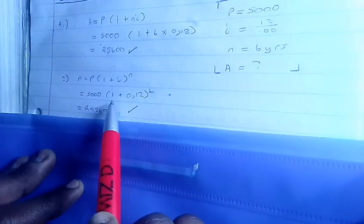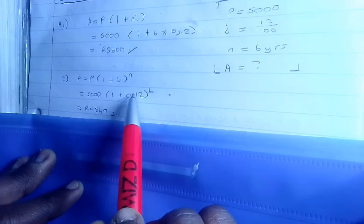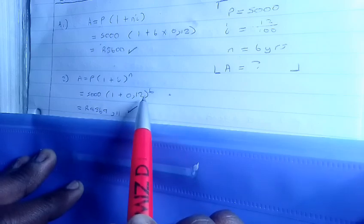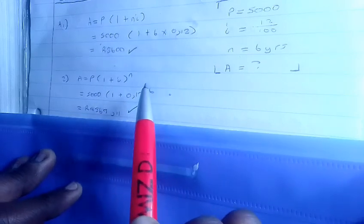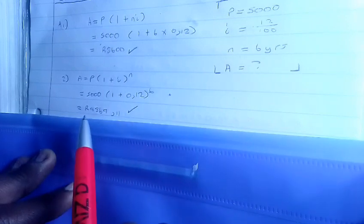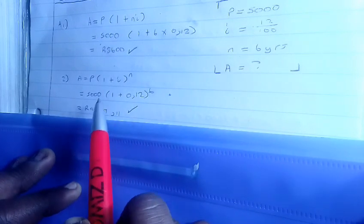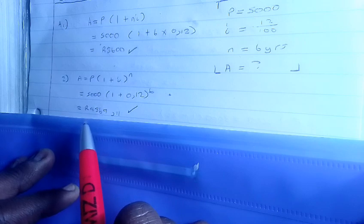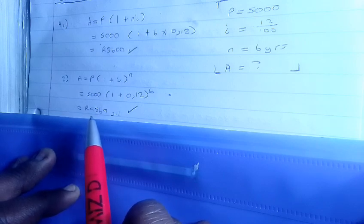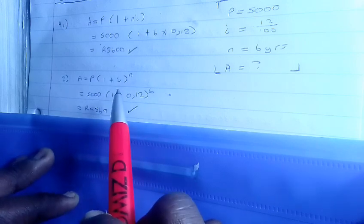So this is how you do it: 5000(1 + 0.12)^6, which gives us an answer of 9869.11, which is greater than the simple interest result.